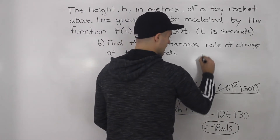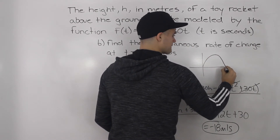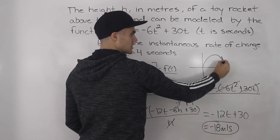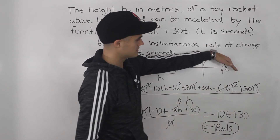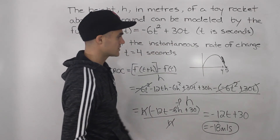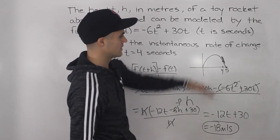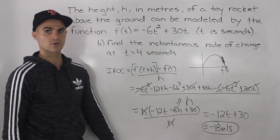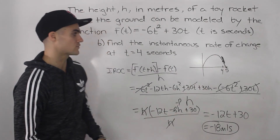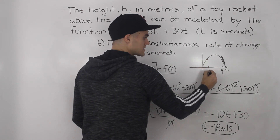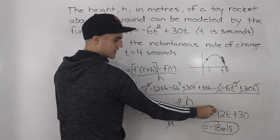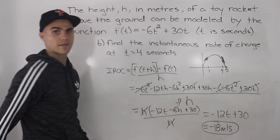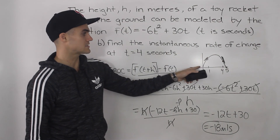If we draw this on a diagram, the parabola hits the ground at five seconds, and four seconds is just before that. The instantaneous rate of change is essentially the slope of the tangent line. If we draw a tangent at t equals four for this equation, the slope of that tangent is negative 18. So the speed of the rocket at t equals four seconds is negative 18 meters per second. If we instead plugged in t equals one, we'd get negative 12 times 1 plus 30, which gives positive 18 — and that makes sense because the rocket is going up at that time. So a positive instantaneous rate of change means the object is going up, and a negative instantaneous rate of change means the object is going down.